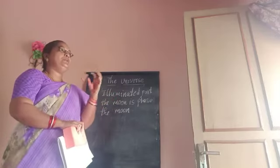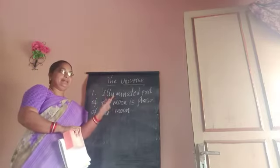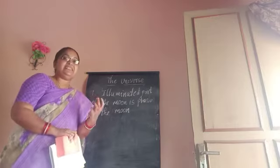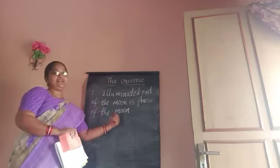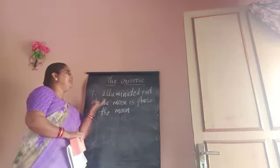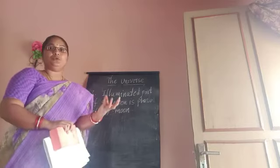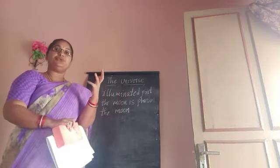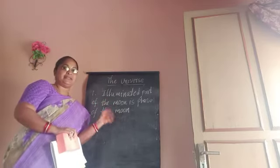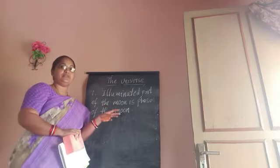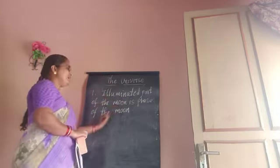The moon is always changing its shape from night to night — like crescent, quarter, gibbous, full moon, new moon. That changing shape, meaning the illuminated part of the moon, is the phase of the moon. Moon phases include waxing crescent, waning crescent, and the various moon phases.